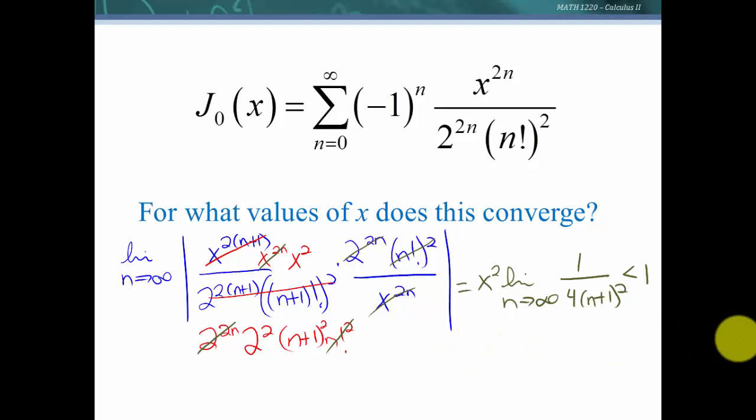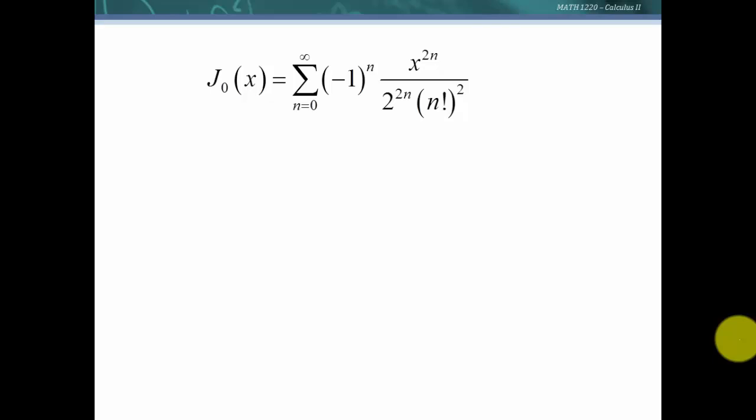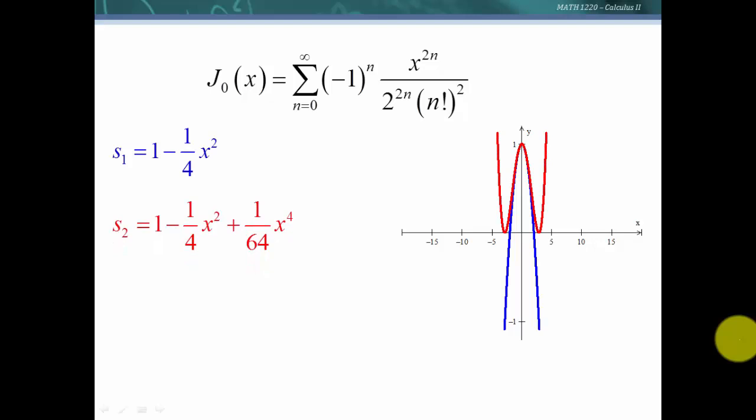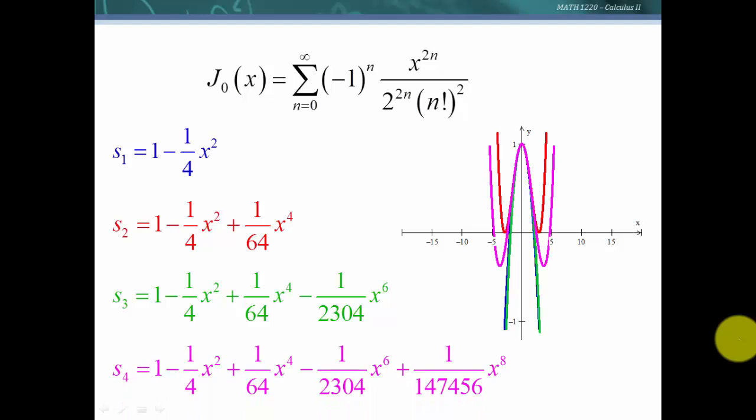Now let's look at the partial sums and their graphs. If we take the first two terms, we have this quadratic equation, and the graph looks like this. If we take another term, s sub 2, we have a 4th degree polynomial. If we add another term, s sub 3, we've got a 6th degree polynomial. s sub 4, we've got an 8th degree polynomial.